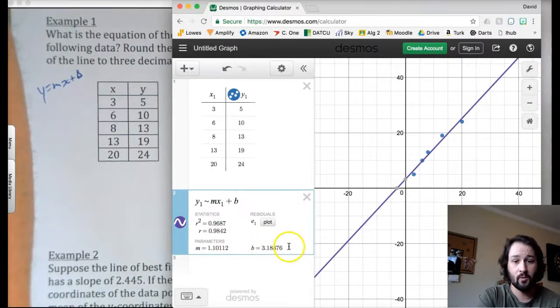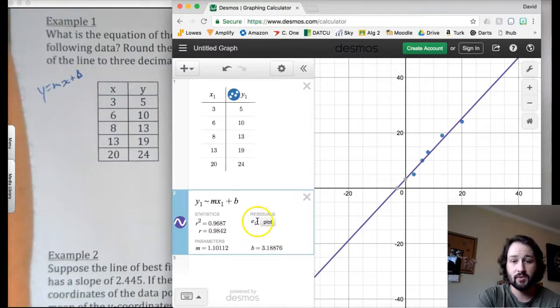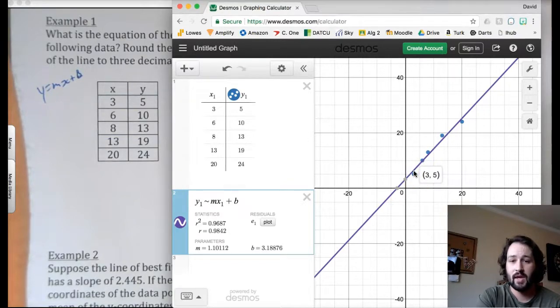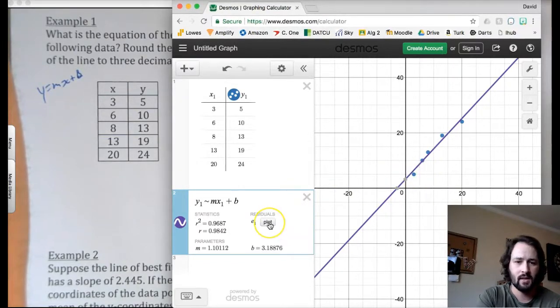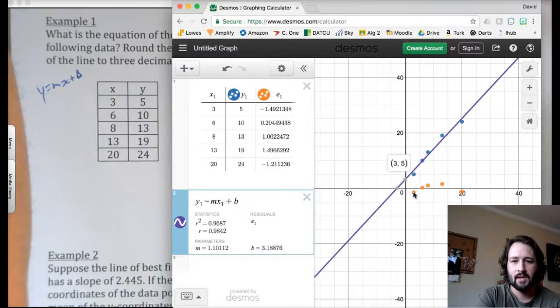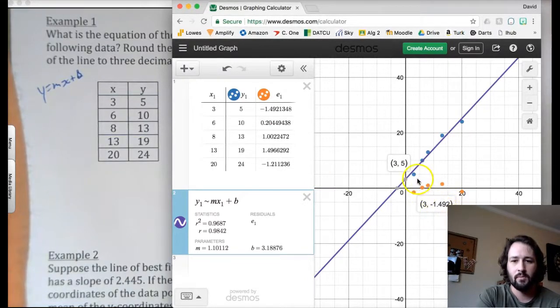M is our slope, B is our y-intercept. This residual thing, what the residual is, is how closely each data point is to an actual point on the line. So if I hit, see what it does when I hit plot. So notice, this first residual, this point, it is that far, the negative 1.492 below where it actually should be.